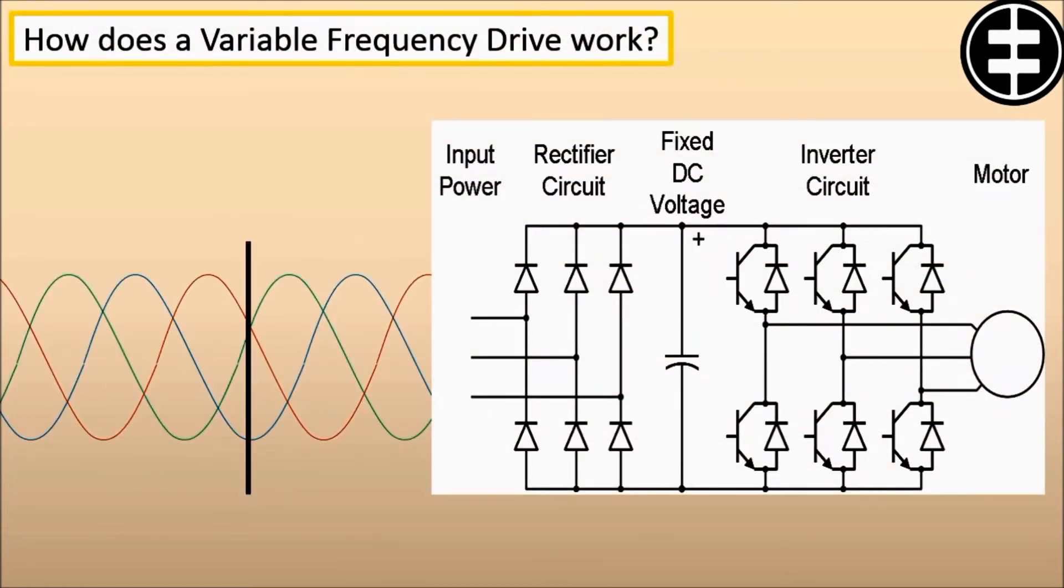How does a variable frequency drive work? The first stage of a variable frequency AC drive, or VFD, is the converter. The converter is comprised of six diodes, which are similar to check valves used in plumbing systems. They allow current to flow in only one direction, the direction shown by the arrow in the diode symbol. For example, whenever A phase voltage is more positive than B or C phase voltages, then that diode will open and allow current to flow. When B phase becomes more positive than A phase, then the B phase diode will open and the A phase diode will close. The same is true for the three diodes on the negative side of the bus. Thus, we get six current pulses as each diode opens and closes. This is called a six pulse VFD, which is the standard configuration for current variable frequency drives.